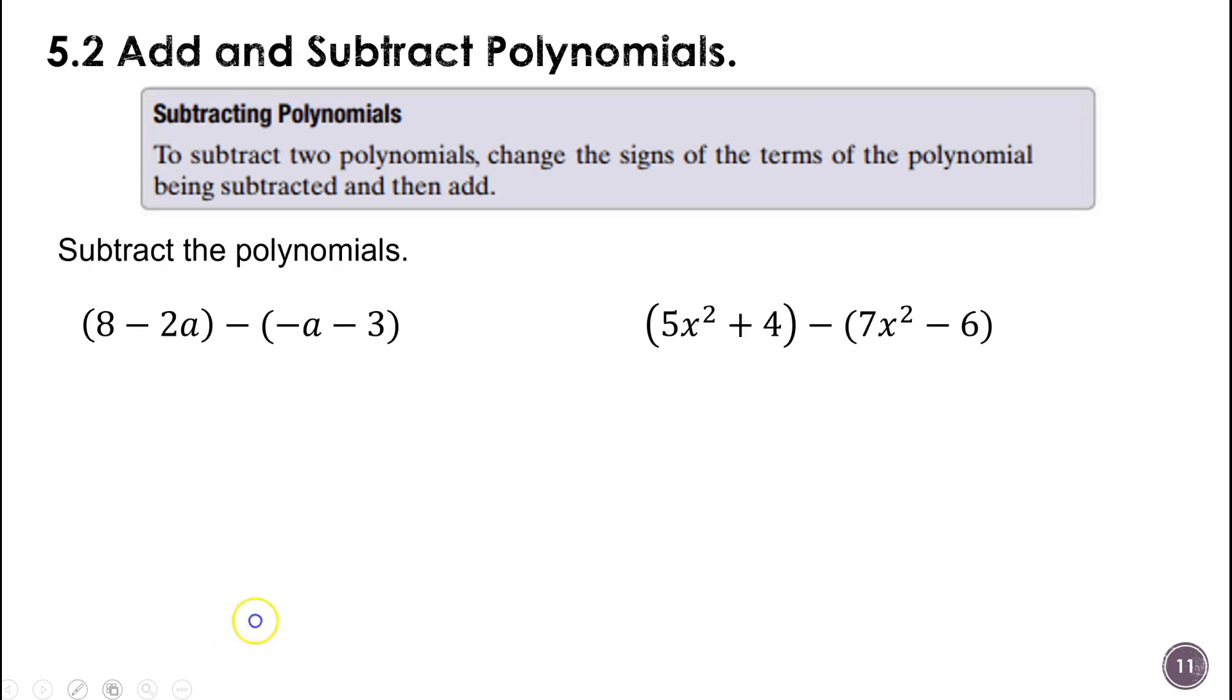And so when we work on this, I'm going to write this out: 8 minus 2a. Now I'm going to change this to a plus sign because minus a negative is going to make that a plus a, minus a negative 3 is going to be plus 3. And then we just combine our like terms, so we have negative 2a and a 1a, so that's negative a. And then we have 8 and positive 3, so plus 11.